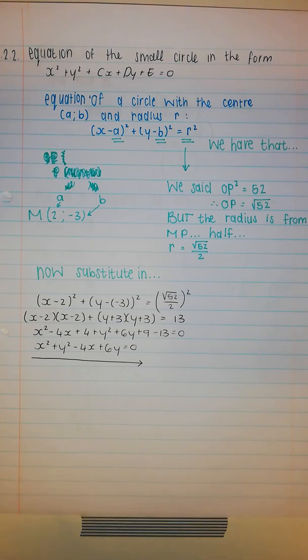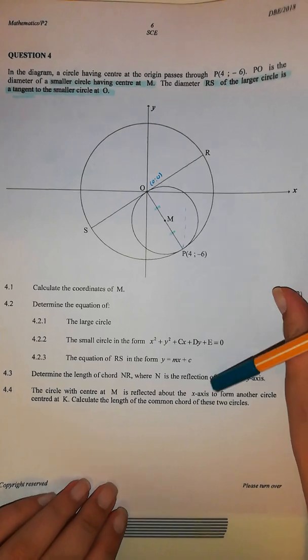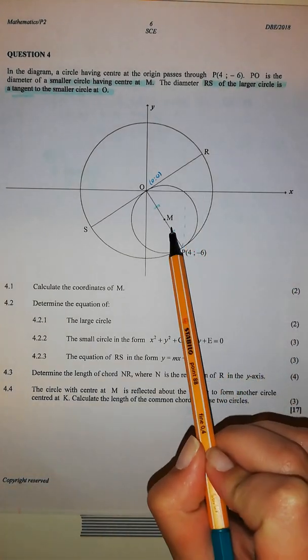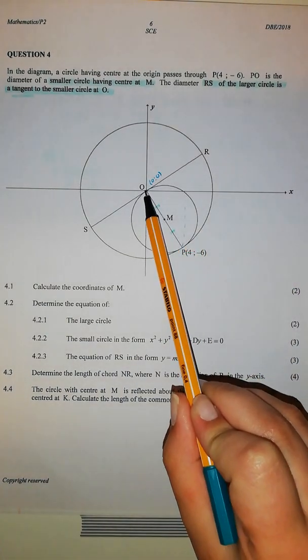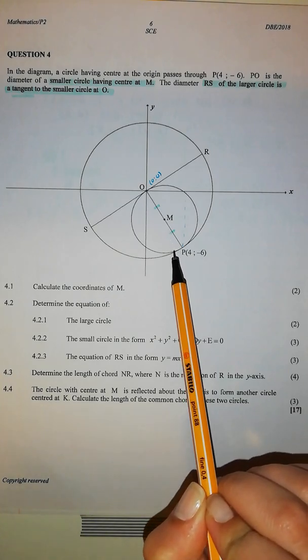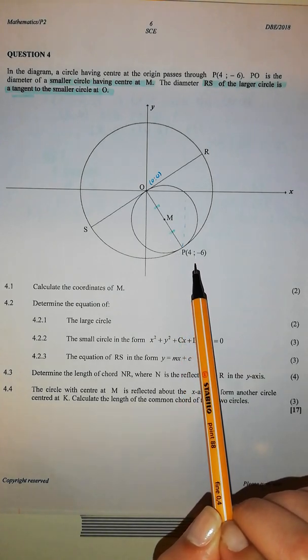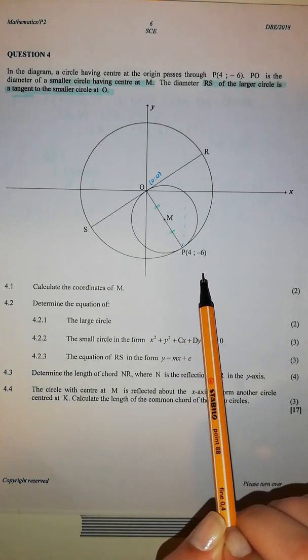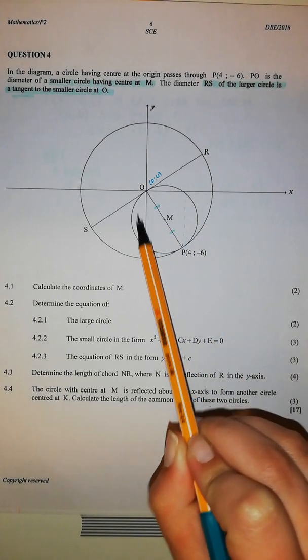When you first look at this, it looks kind of scary, but relax. The small circle doesn't have its center at the origin, which means we can't use x squared plus y squared equals radius squared. That's not going to work for this one.